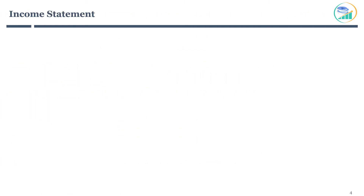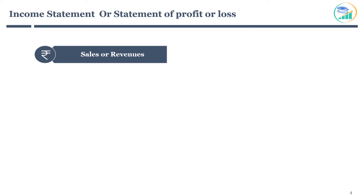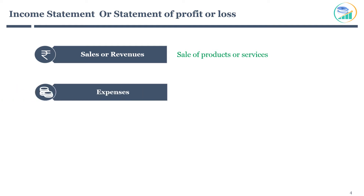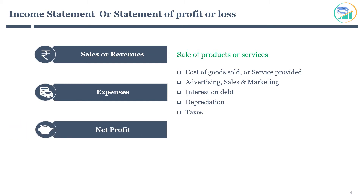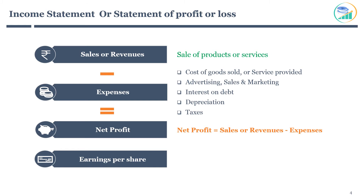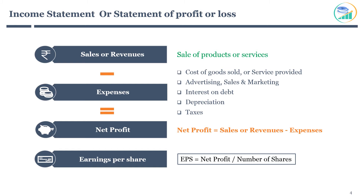Let's start with the income statement, also known as the statement of profit or loss. The objective of the income statement is to answer the question: how much money did you make last quarter or year? The income statement has four main components. It starts with sales or revenues — how much money you made through the sale of products or services. Then come the expenses, which are associated with manufacturing and selling products or services, including cost of goods sold, advertising, sales and marketing, interest on debt, depreciation, and taxes. The third line item is net profit, calculated as sales or revenues minus expenses. The next line item is earnings per share, also called EPS, calculated as net profit divided by number of shares.